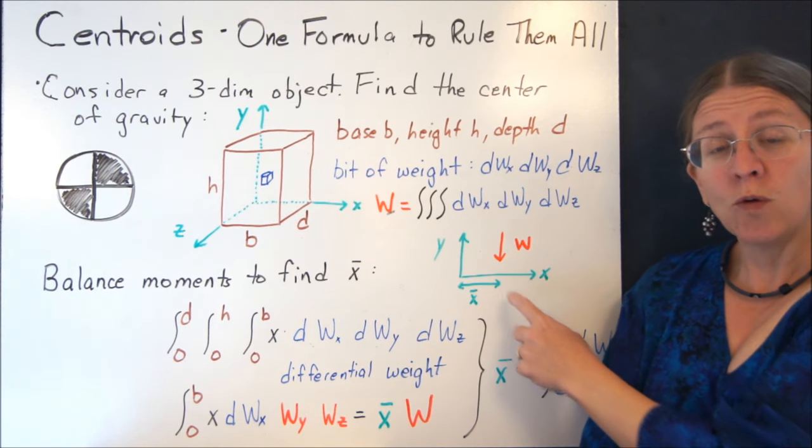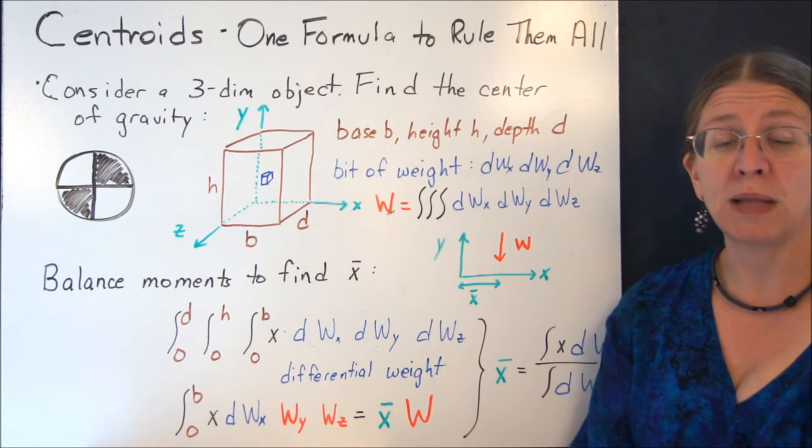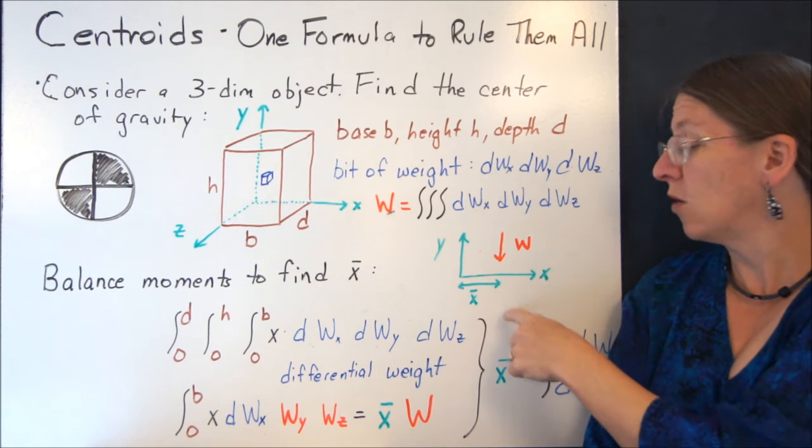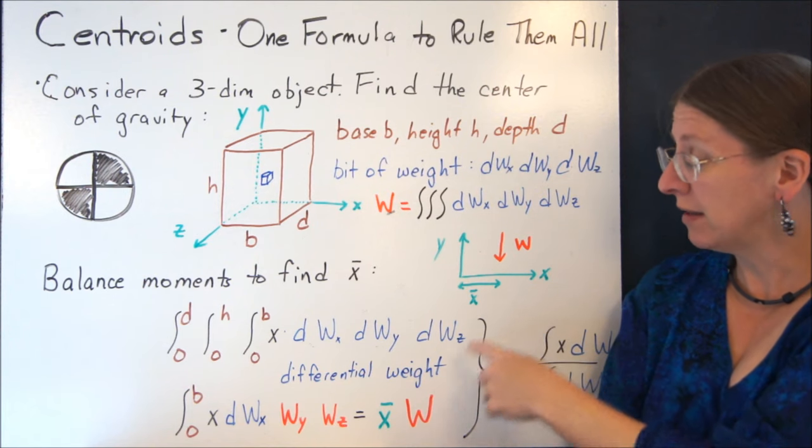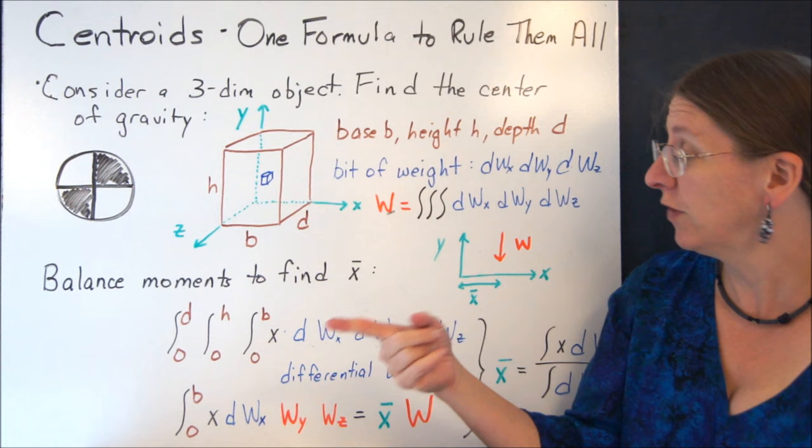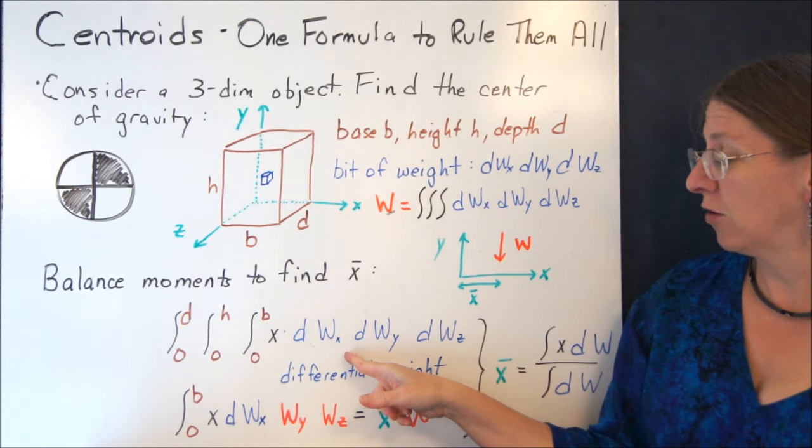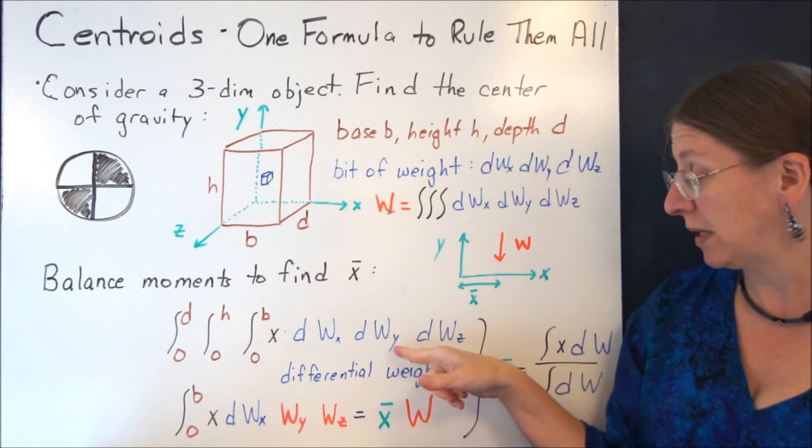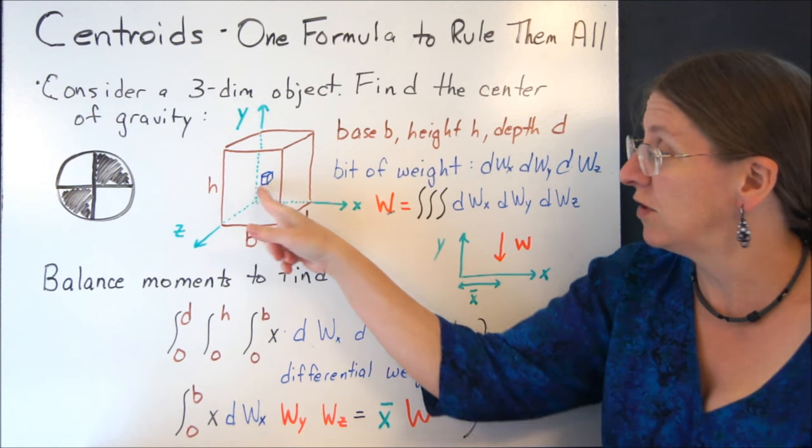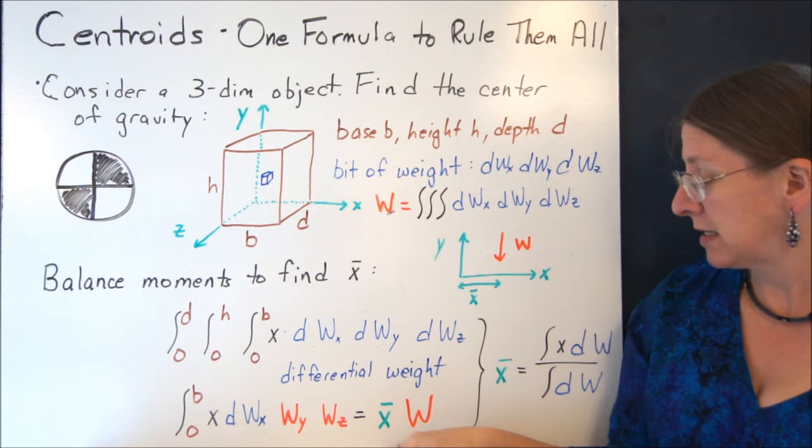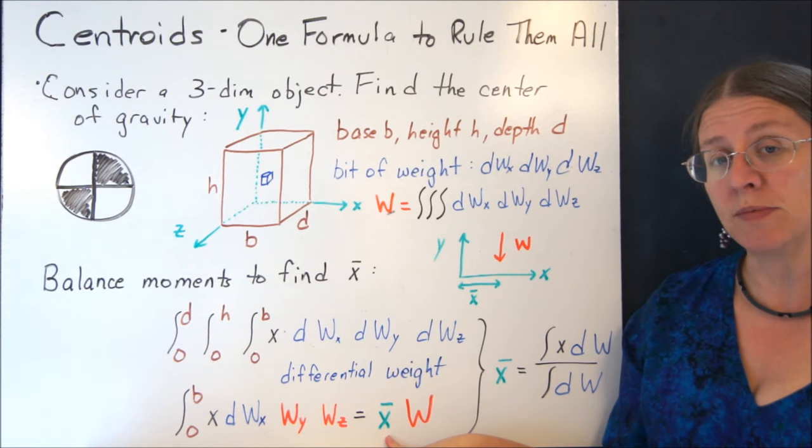So what I'm looking for for my centroid is an equivalent place to put the whole weight. And when I find this, I could actually balance my moments just like a pencil on your finger. I'm going to take the integral of x times each of these individual bits of weight at their individual bits of placement.